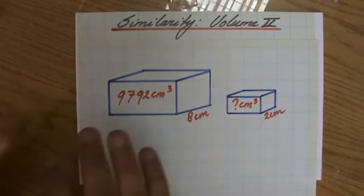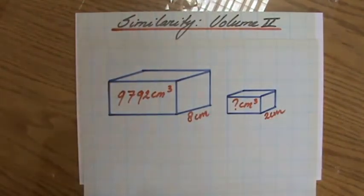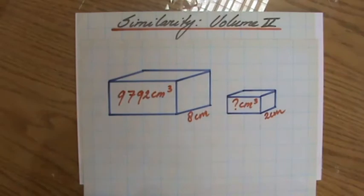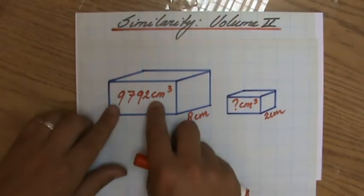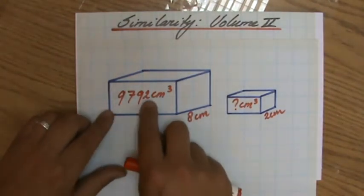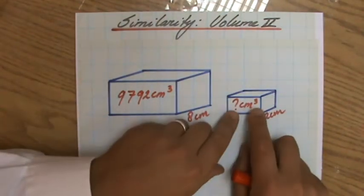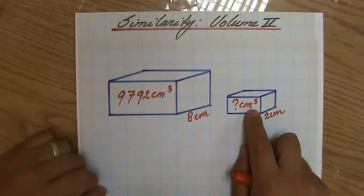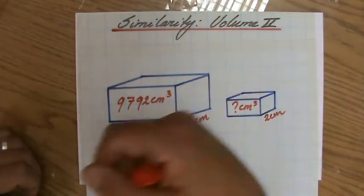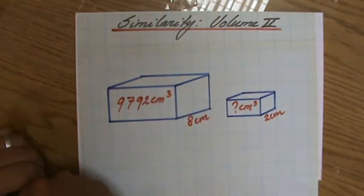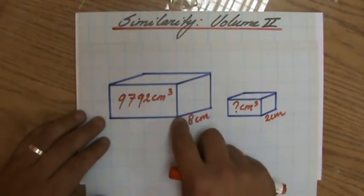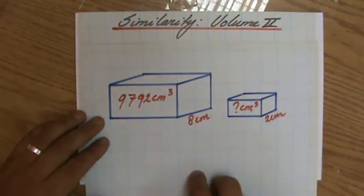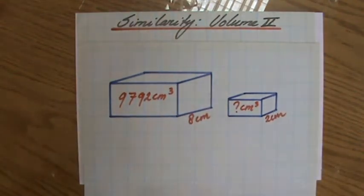So what is the situation? We have two similar cuboids — three-dimensional rectangles if you like — and the volume of one of them is 9,792 cm³. What is the volume of the smaller box? It's going to be less than 9,792, but what is it going to be exactly? They also give us a length here: 8 cm, and the corresponding side is 2 cm.